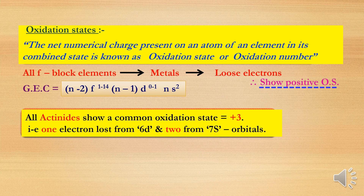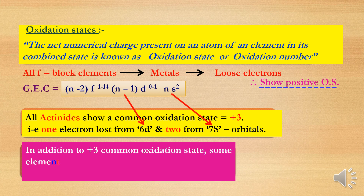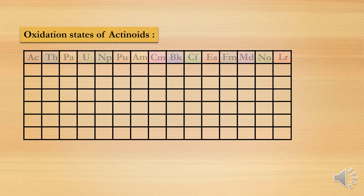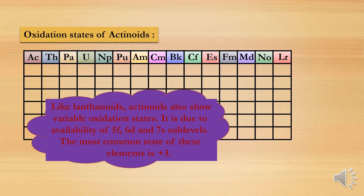In addition to the +3 oxidation state, actinides show variable oxidation states ranging from +2 to +7. In contrast, lanthanides show +3 as the common oxidation state with only +2 and +4 as additional states. In actinides, variable oxidation states are possible due to the very small energy gap between 5f, 6d, and 7s subshells, which allows those electrons to participate in bond formation.